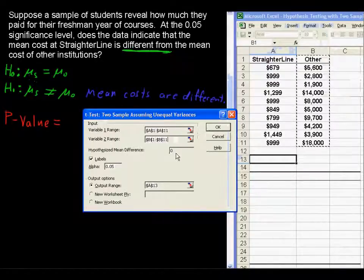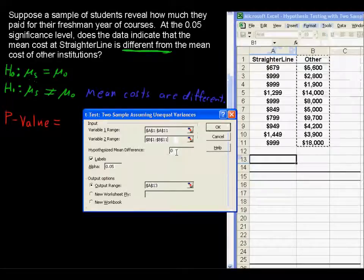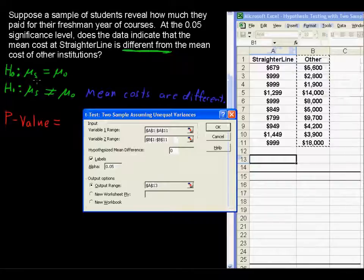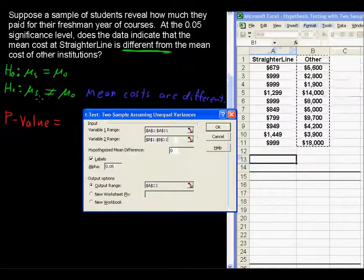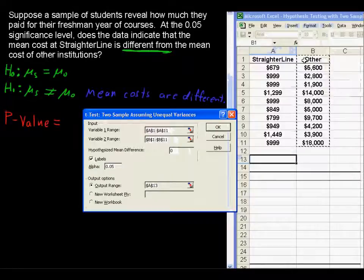Hypothesized mean difference. Most of the time you do this, testing the two means, it will be zero. So we're saying, is the mean of one equal to the other? That means that there is no difference. Or there is a difference with the alternative. So that's going to be zero. Labels, I have that checked because we do have labels. This time I decided to choose those labels.